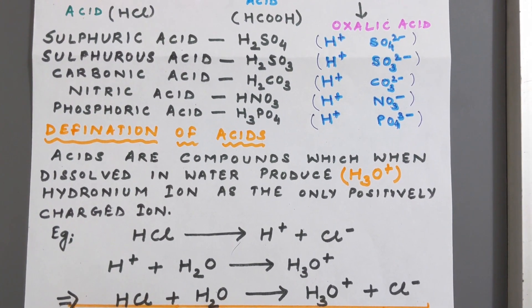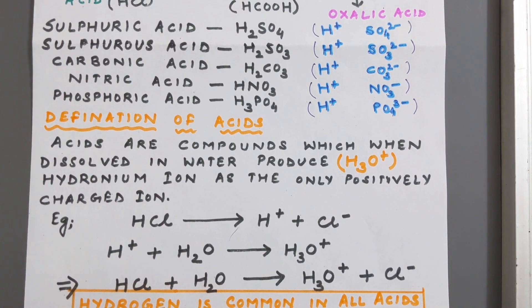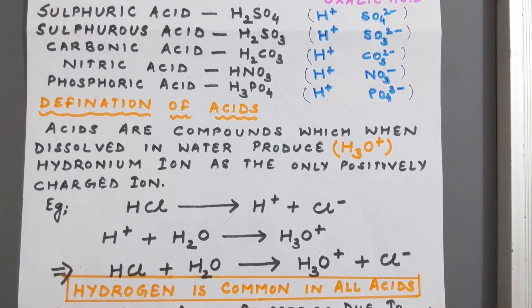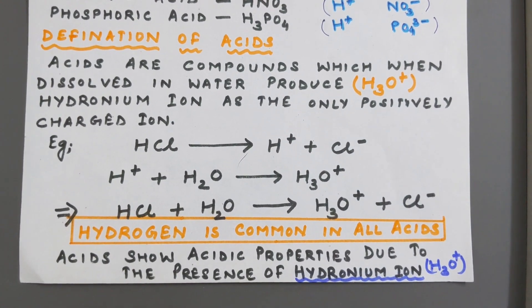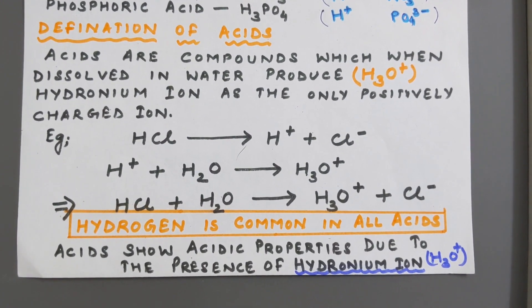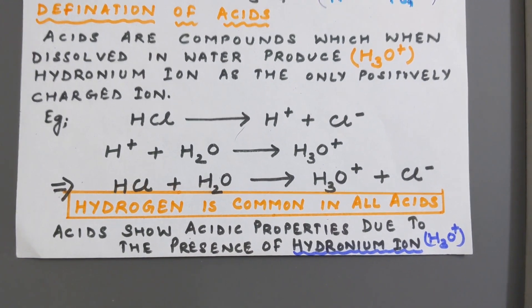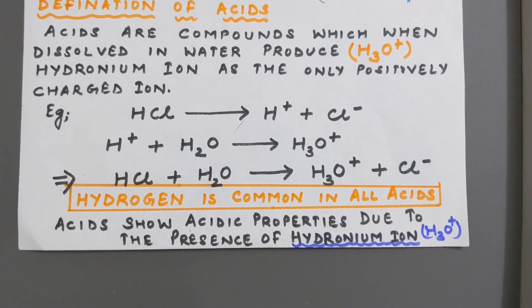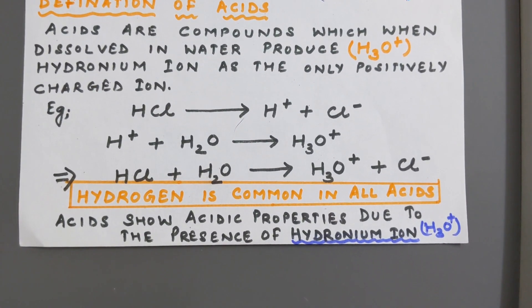So how can we define an acid? Acids are compounds which, when dissolved in water, produce hydronium ion H3O+ as the only positively charged ion. Acid is basically formed of hydrogen ion and chloride ions. Whenever we dissolve hydrochloric acid in water, hydrogen ions of HCl combine with water molecules to form hydronium ion H3O+.